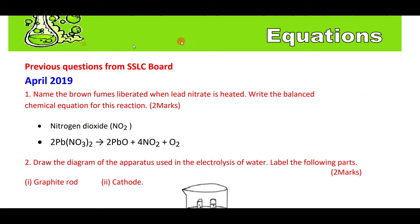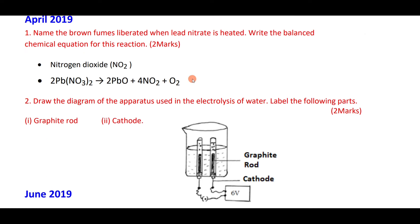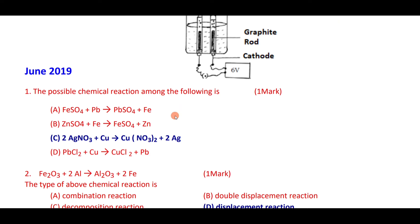Draw the diagram of the apparatus used in the electrolysis of water — this is a very important diagram because it has been repeated many times in the examination. Among the given options, the possible chemical reaction is option C: 2AgNO₃ plus copper gives copper nitrate plus 2Ag.